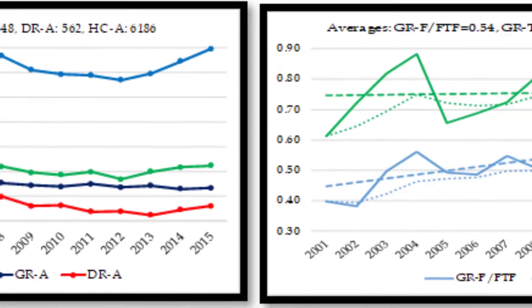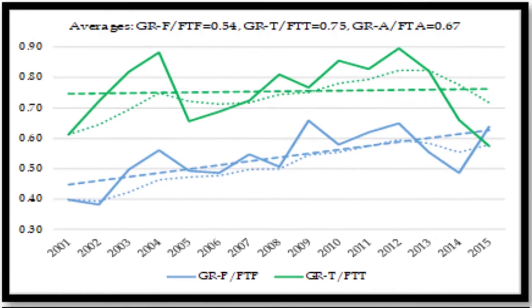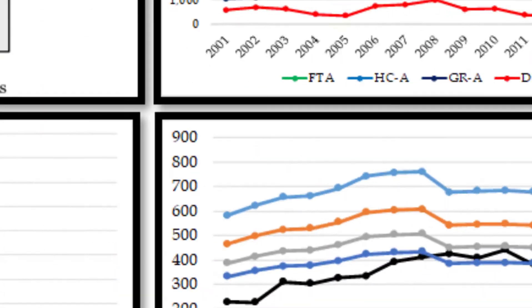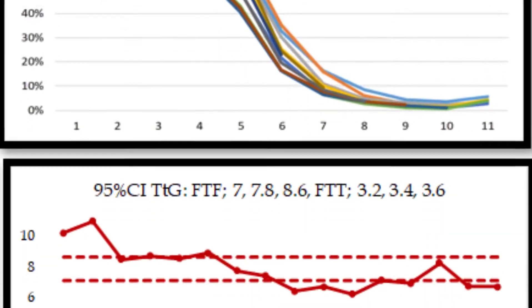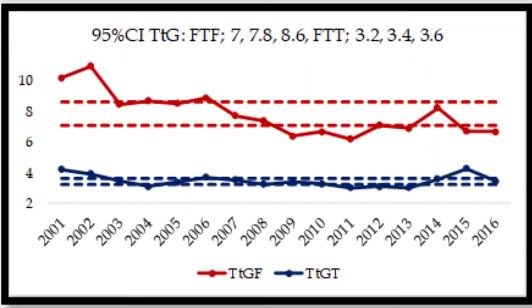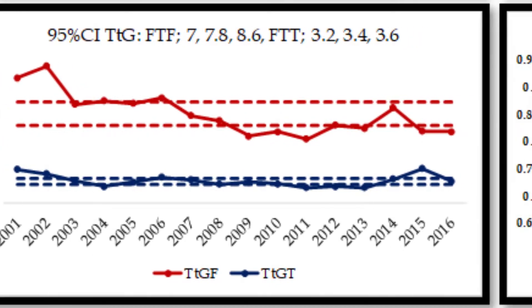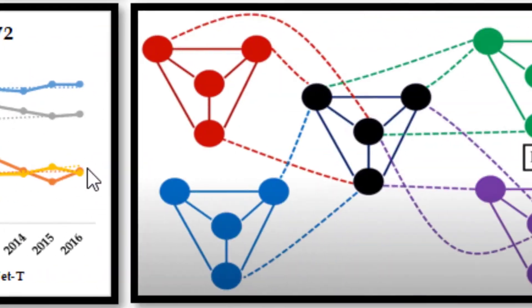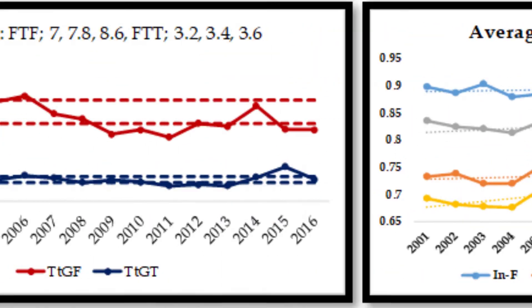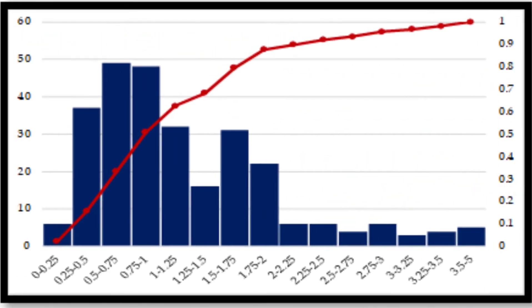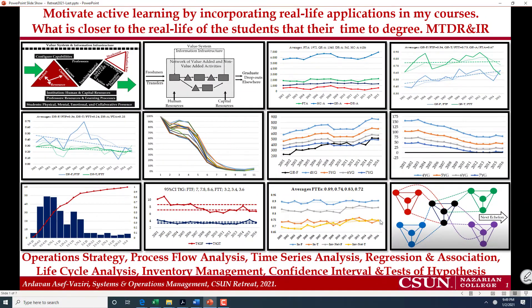Additional concepts include association and regression, life cycle analysis, confidence interval and test of hypothesis, networks, and visualization for communication, among others. Let me show you a piece of one of my lectures,